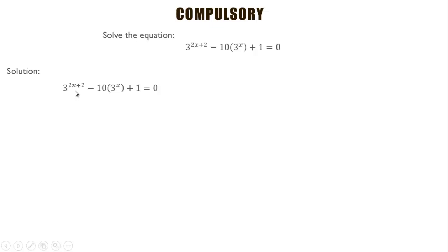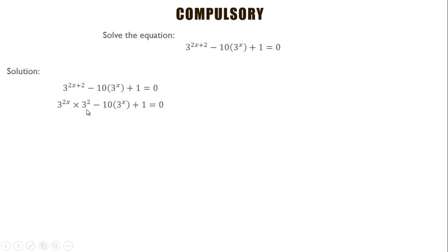Remember that if you have a^(m+n), it is the same as a^m times a^n. That same rule is applied here — it was originally in this form before the law of indices was applied to get it in this form, where one of the bases was taken and the exponents were added.